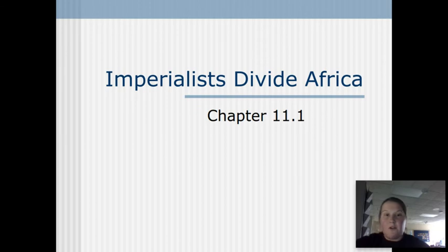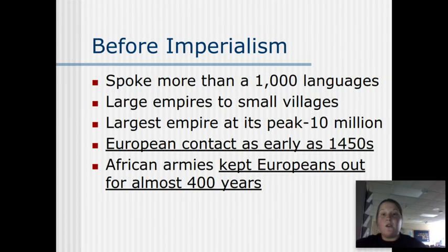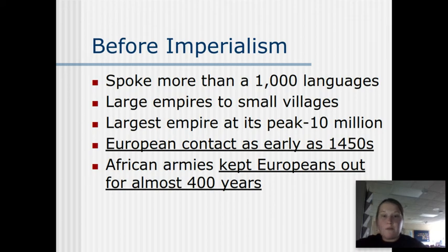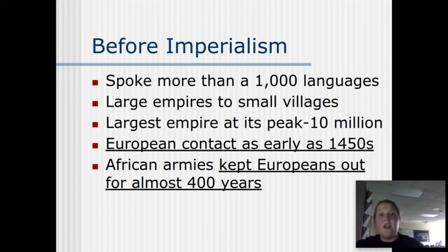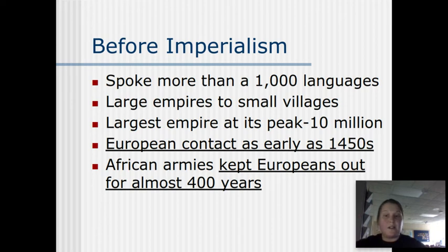So going — we already talked about this. This is the Scramble for Africa. If you guys remember from Thursday, Africa before the Europeans came in was an incredibly diverse continent: huge empires, tiny villages, tons of languages. And although the Europeans had contact as early as 1450, they were kept out by African armies and some other reasons as well.